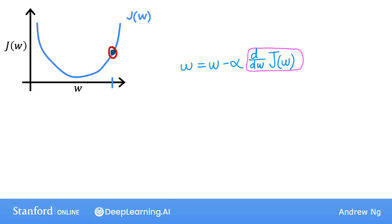A way to think about the derivative at this point on the line is to draw a tangent line, which is a straight line that touches this curve at that point. In math, the slope of this line is the derivative of the function J at this point.